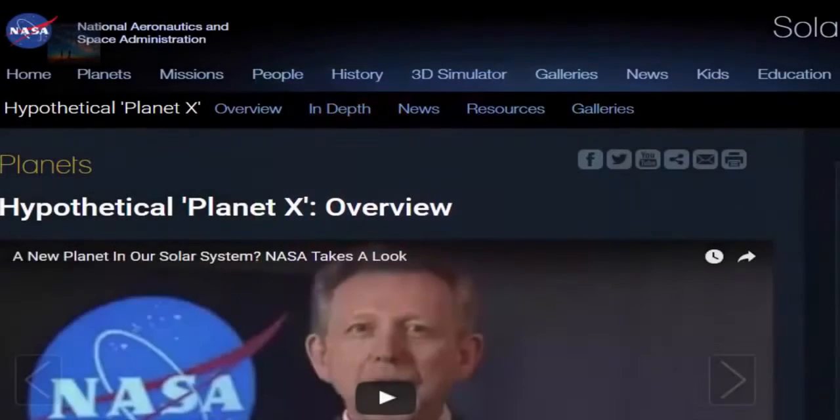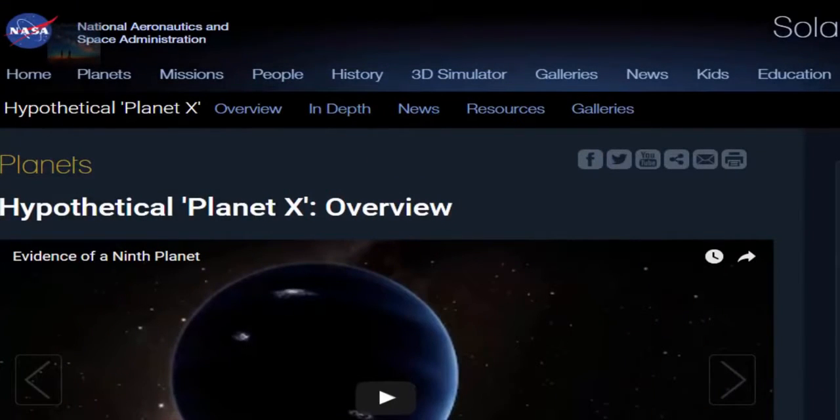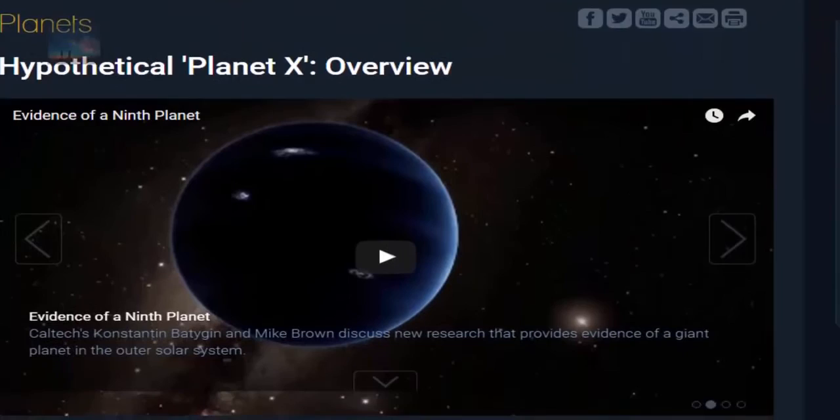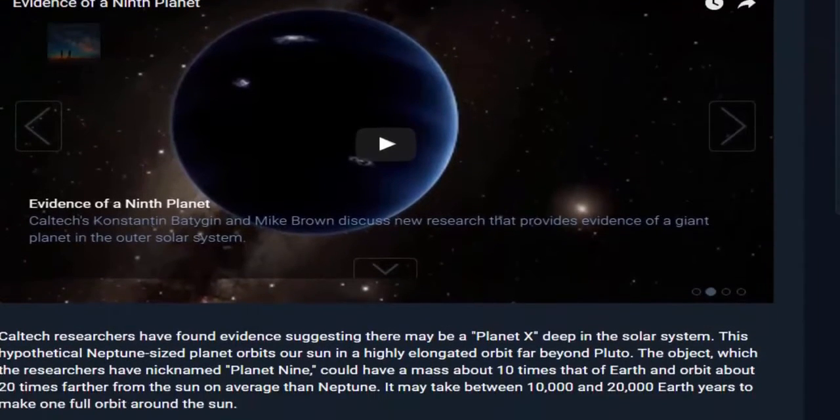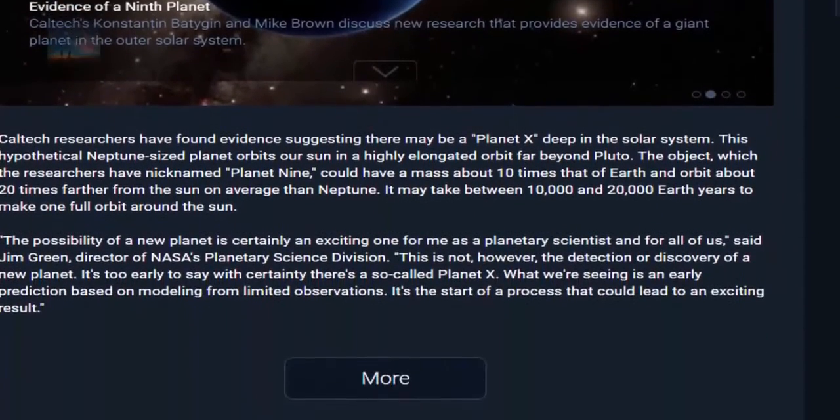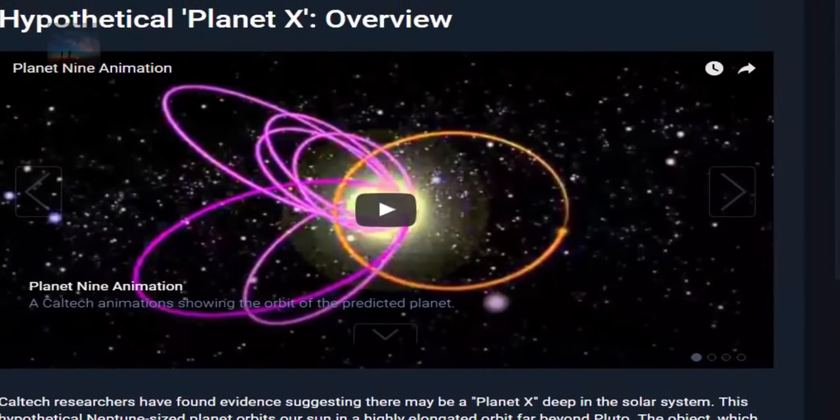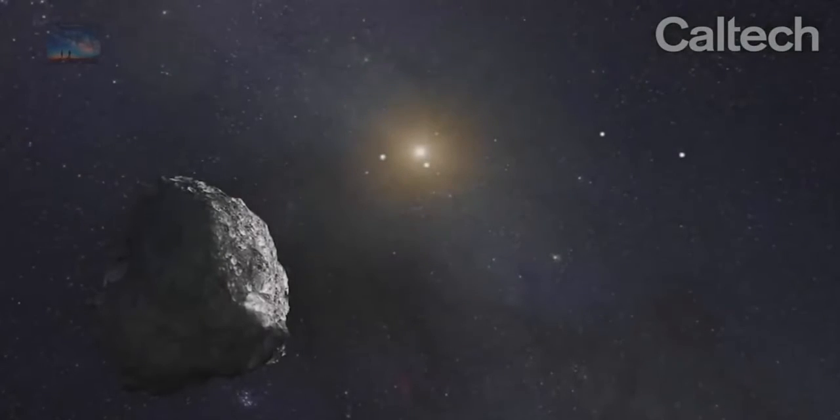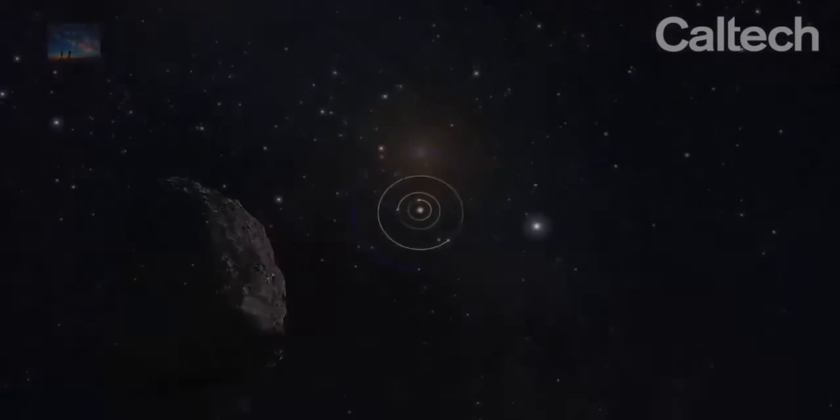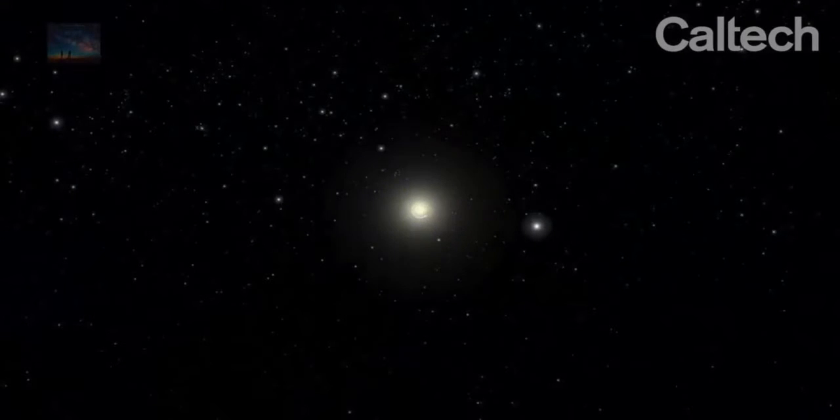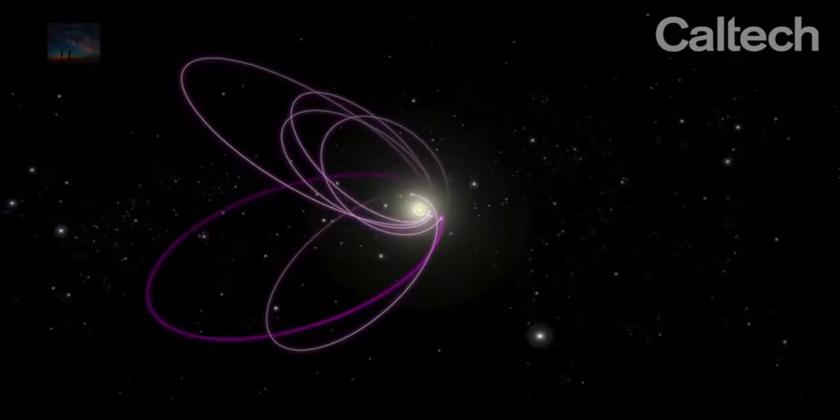And finally, number one on our list, Planet Nine, Speck of Light Observed. In January of 2016, researchers at Caltech stunned the world by announcing the discovery of Planet Nine. A speck of light was observed and astronomers and stargazers around the world are waiting in anticipation for more confirmation. Though the NASA researchers are stressing that this is only a speck of light that has been observed, that can confirm that they are on the verge of discovering the planet.